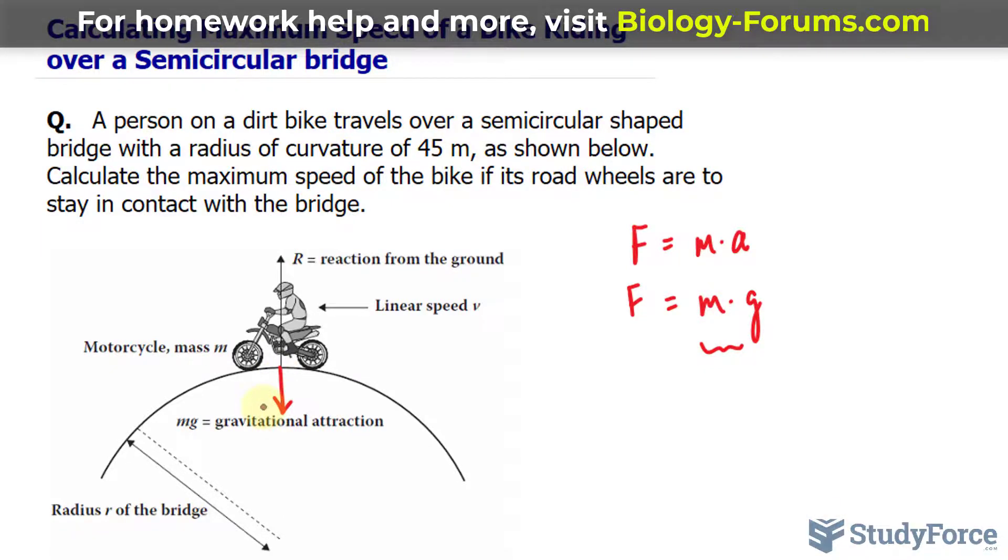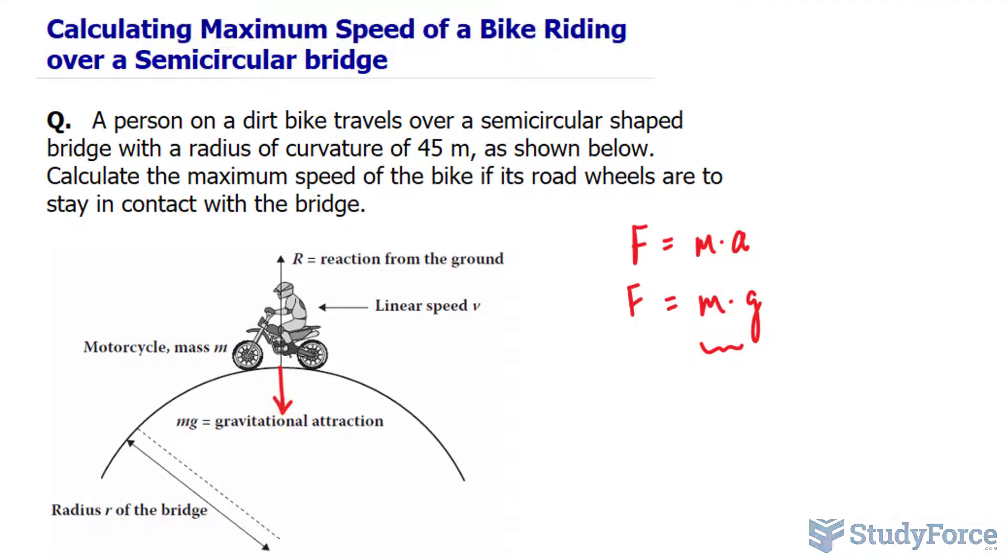Now you'll notice in this diagram that there's also another vector that is going directly upwards, and that is your normal vector. It's denoted here as the reaction from the ground. Remember that any force that something exerts on the ground, there is an equal and opposite force exerted by the ground on that object. So if the bike is pushing down on the ground, the ground is also doing the same thing. And this is why we show the normal.